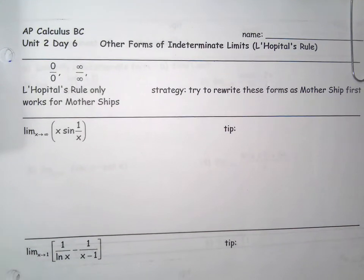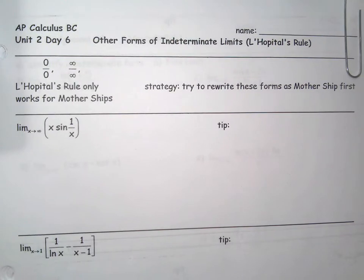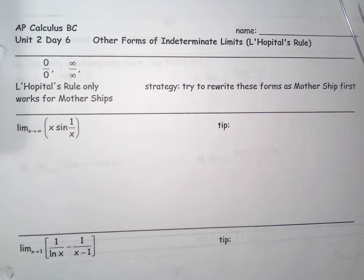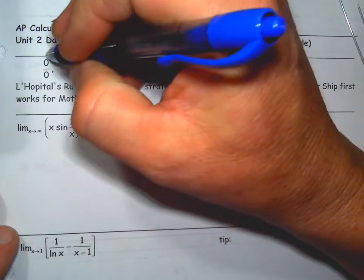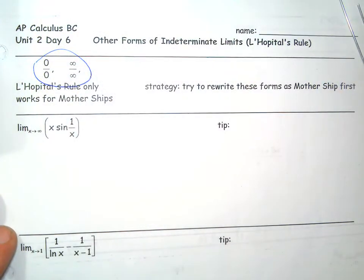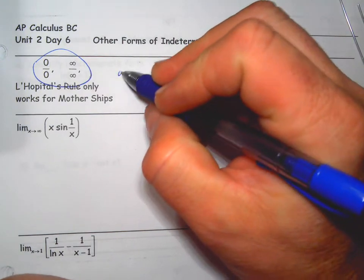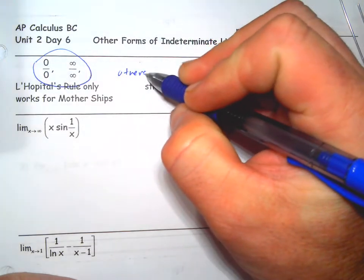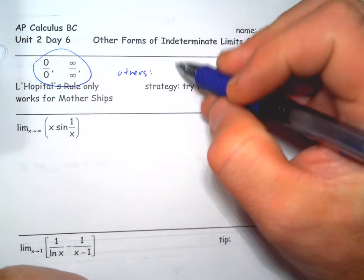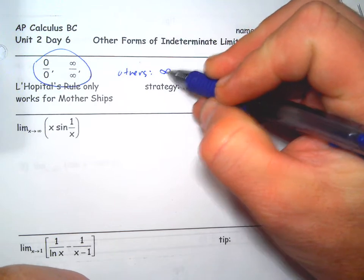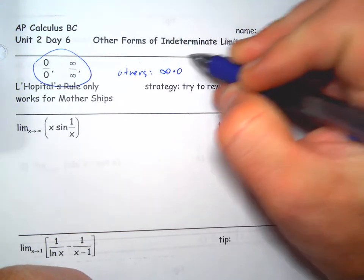Okay, Unit 2 Day 6: other forms of indeterminate forms and indeterminate limits, and opportunities to use L'Hôpital's rule. These are the ones we can use L'Hôpital's rule on — we might call them the motherships — but we're going to encounter some others that are indeterminate but can't be used with L'Hôpital's rule unless we manipulate them.